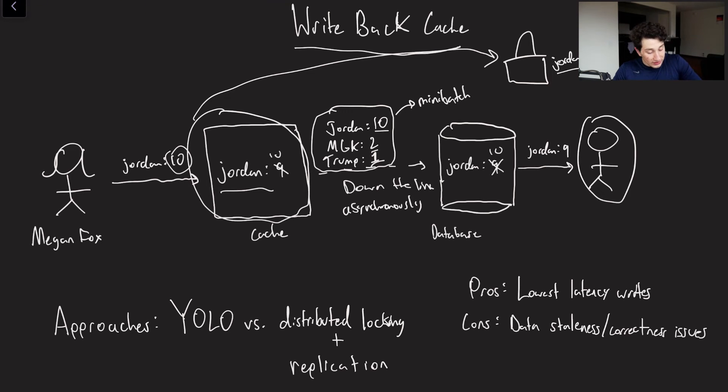Of course, that being said, if this guy wants to go ahead and read from Jordan, he would have to try and grab the distributed lock. The distributed lock would then notify the write-back cache that someone is trying to read the value. Jordan could then, or rather the write-back cache could then write the value to the database and say Jordan is 10. This is all because we tried to grab that distributed lock. And then finally, we would get the up-to-date read value.